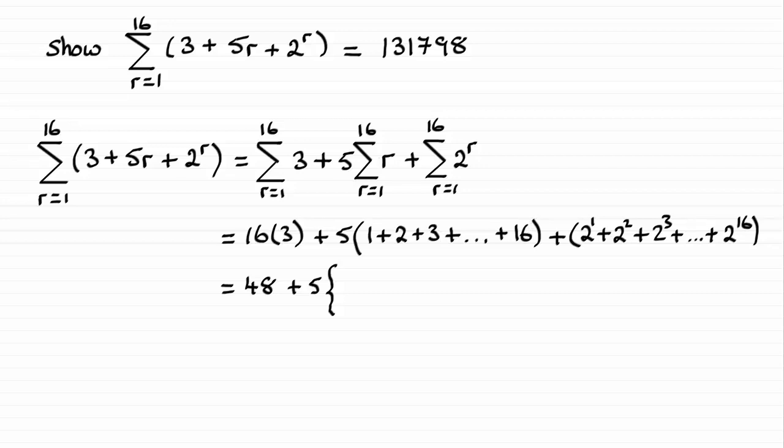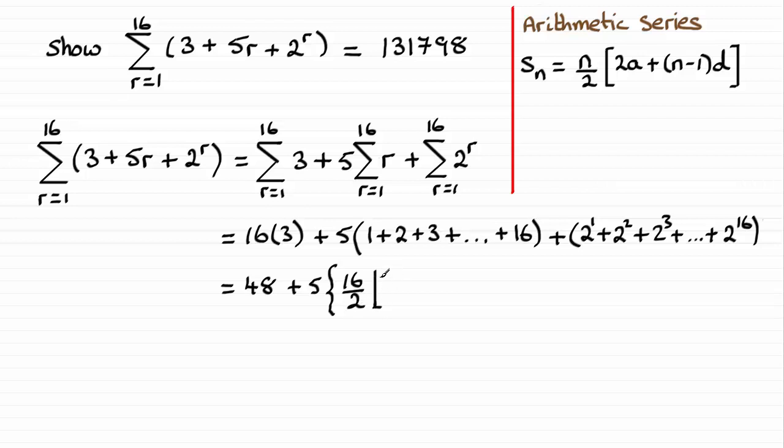So you should be familiar with the formula for the sum of an arithmetic series. If not, do check out my videos on this. So according to the formula, it's n over 2. So that's going to be 16 over 2. I know that's 8, but I'm just going to show the working here. I'll put a square bracket there. It's twice the first term. 2 times the 1, which is the first term.